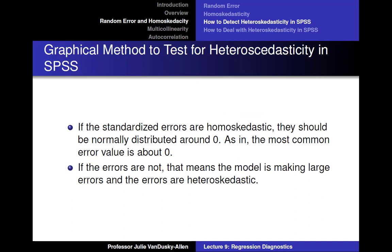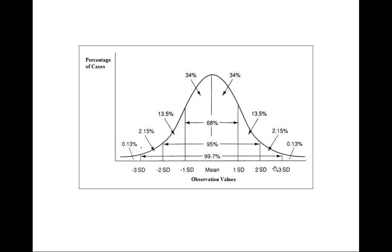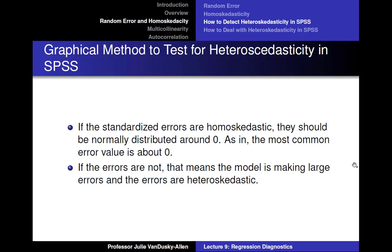In order to determine whether our errors are heteroscedastic, we can use graphical methods in SPSS. First, note that if the standardized errors — or errors that are transformed into z-scores, which are a lot like t-scores — of our regression models are homoscedastic, they should be normally distributed around zero, as in the most common error value is about zero. Recall that with a normal curve, 68% of the observations are one standard unit from the mean, 95% are within two standard units, and 99.7% are within three standard units of the mean. If the errors are not normally distributed around zero, that means the model is making large errors and the errors are heteroscedastic.